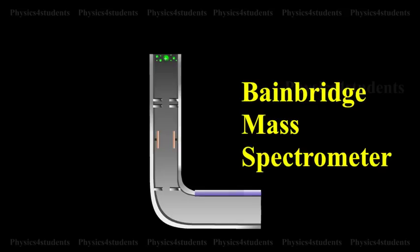A schematic diagram of this spectrometer is shown in the animation. Atoms with one or more electrons removed have a net positive charge and they become positive ions. A beam of positive ions produced in a discharge tube is collimated into a fine beam by two narrow slits S1 and S2.